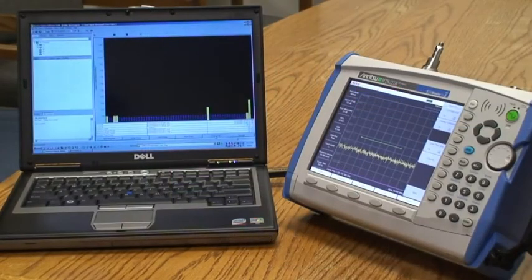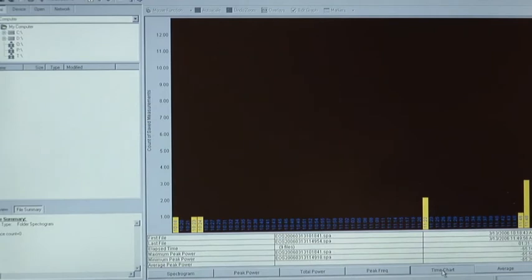In addition to the Spectrogram view, you can also look at a time chart which makes it easy to identify at what time the violators came on and for how long.